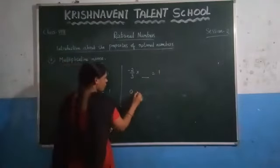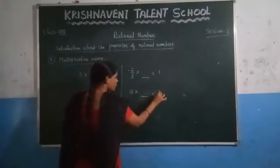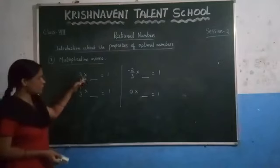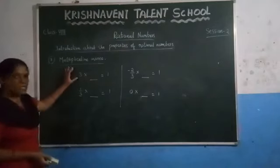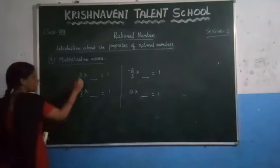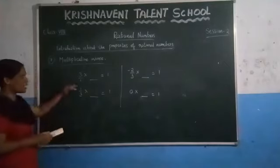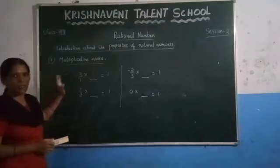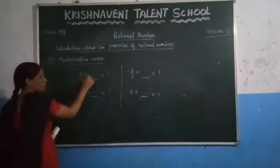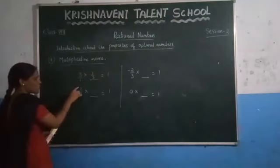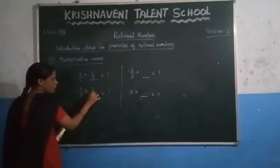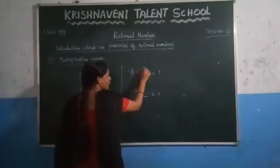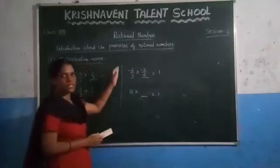Consider also 0 — multiply one number to get the result as 1. To find the multiplicative inverse, you just take the reciprocal of the given number. The reciprocal means: if you have a number in the form of a fraction, you interchange the denominator and the numerator. The reciprocal of 3 by 1 is 1 by 3. The reciprocal of 1 by 3 is 3 by 1. The reciprocal of minus 2 by 3 is minus 3 by 2.